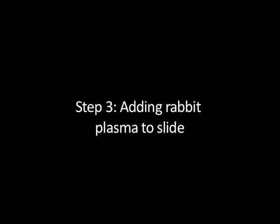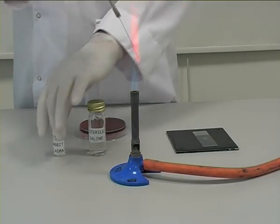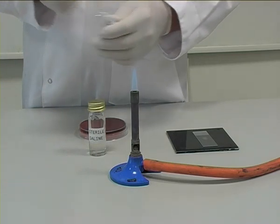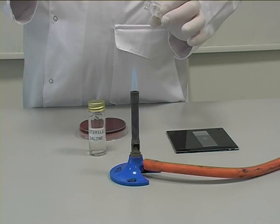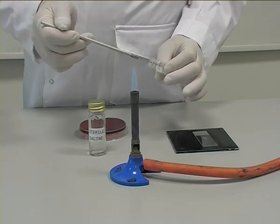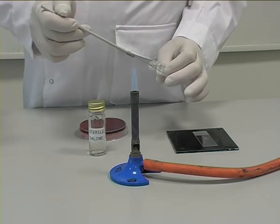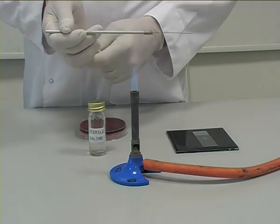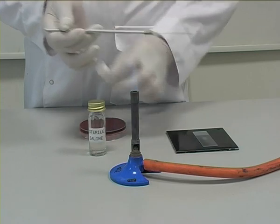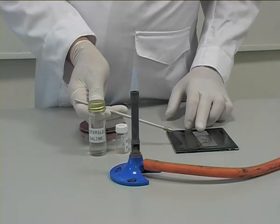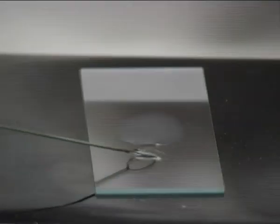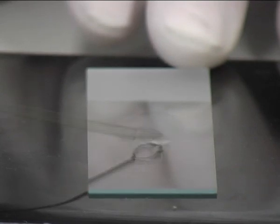Step 3: Adding rabbit plasma to the slide. Using a sterile inoculating loop, a drop of rabbit plasma is removed from a bottle. The drop of rabbit plasma is placed on the slide next to the suspension. The two drops are mixed together a little so that they overlap slightly.